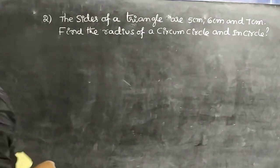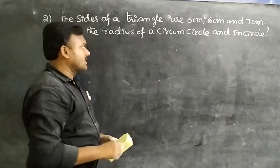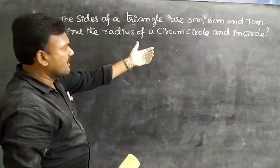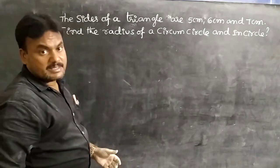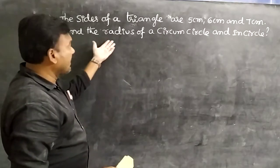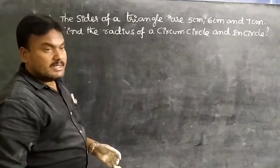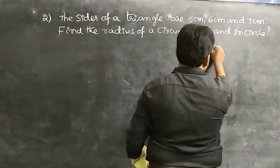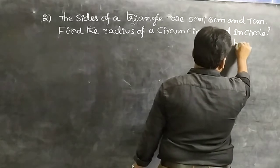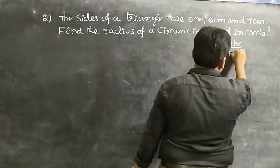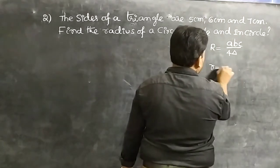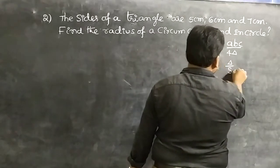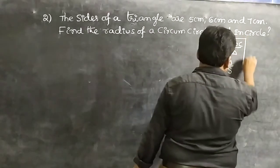Problem 2: the sides of a triangle are 5 cm, 6 cm, and 7 cm. Find the radius of the circumcircle and incircle. The circumradius R = ABC / 4Δ, and the inradius r = Δ / s. Given: a = 5 cm, b = 6 cm, c = 7 cm.